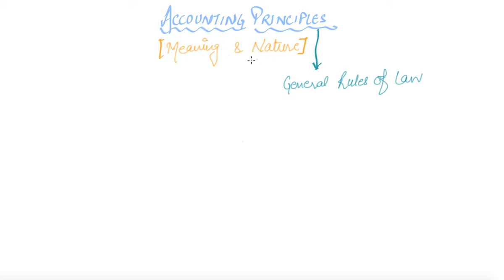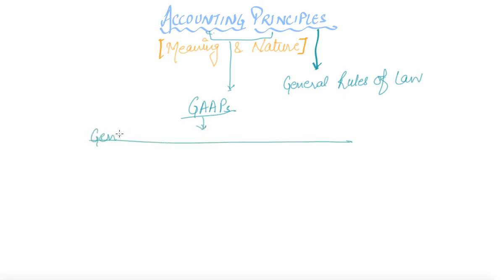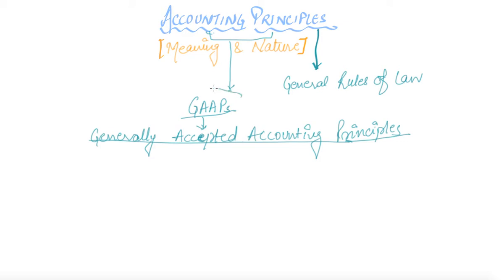If we talk about accounting principles, what we mean by accounting principles — in terms of accounting, principles are basically known as GAAP, that is Generally Accepted Accounting Principles. By accounting principles, one means GAAP — those principles which are generally accepted by the firm.